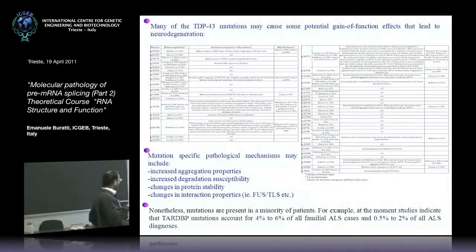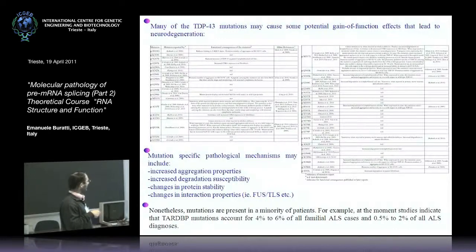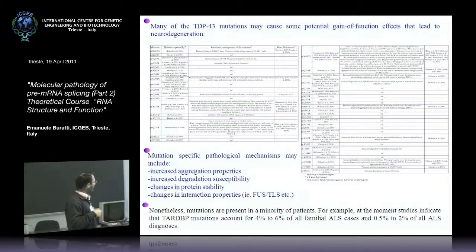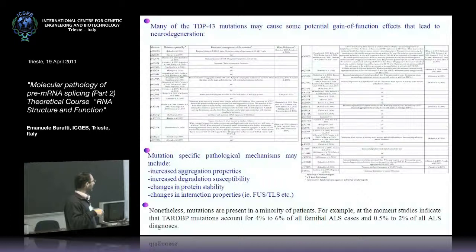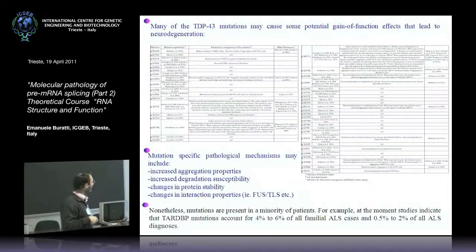There is also evidence that some of these mutations are pathologic and act through a gain-of-function mechanism. However, mutations are present in a very small minority of patients — only 4 to 6 percent of all ALS patients carry mutations in this gene, or 0.5 to 2 percent of all patients.